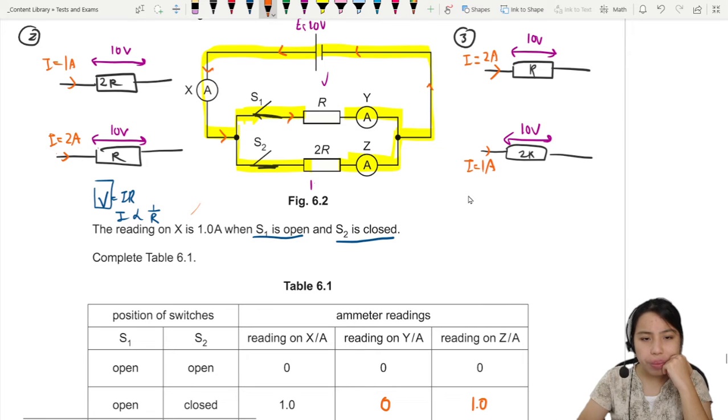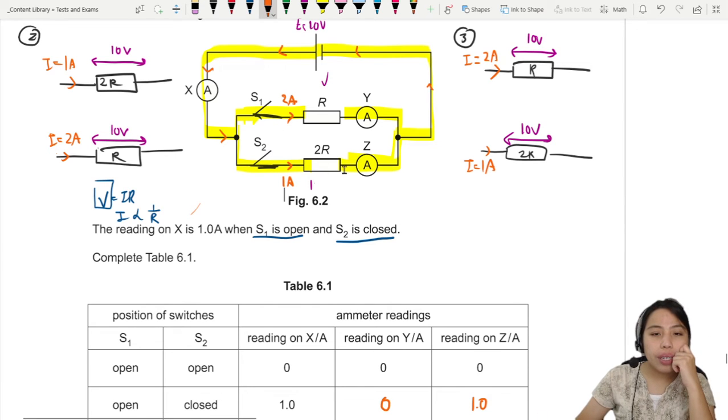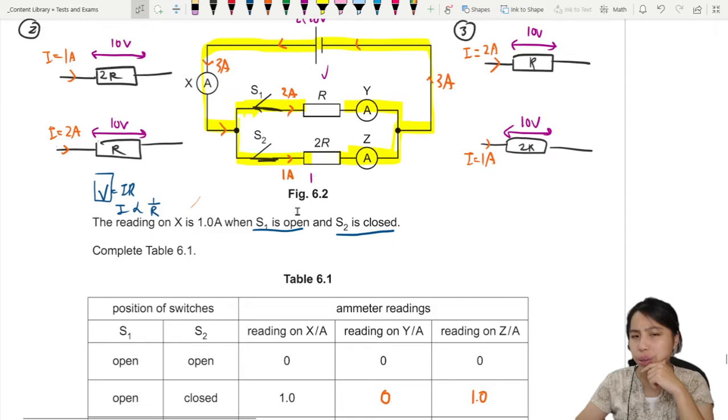So in total, because battery is still 10 volts. For R, we have 2 amps. For 2R, we have 1 amps. Higher resistance, lower current. But it means when they join together, this should be 3 amps. Or in the first place, 3 amps is coming in. Then the 3 amps will split. 2 amps go up, 1 amp go down. We need to write this down.